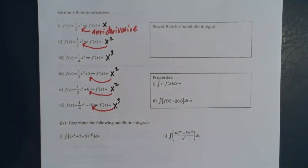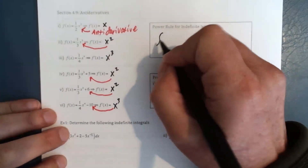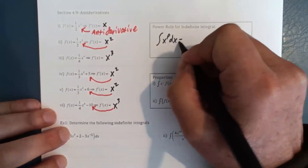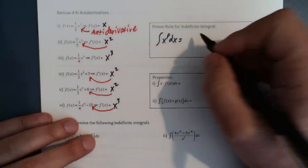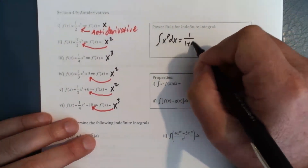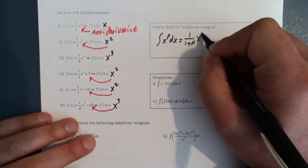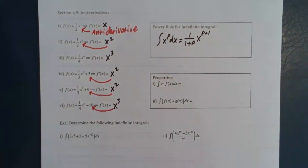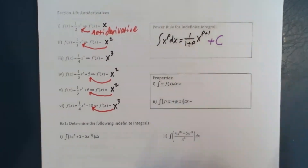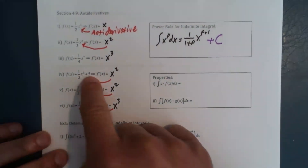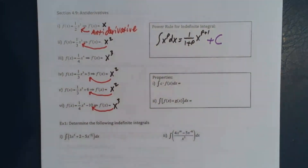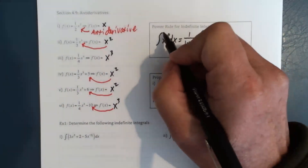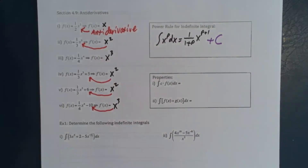So we're going to come up with a power rule for indefinite integrals. The integral of x to the p power dx is going to be one over (one plus p) times x to the (p plus one) power. And here's the important thing: plus an arbitrary constant. Like we had the plus five, the plus six, the minus ten — we don't know if there's a constant there, so we just put a plus C when we do an anti-derivative or an integral. By the way, this elongated S is the integral symbol, and so now we are into integral calculus.